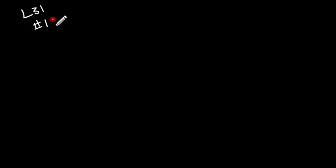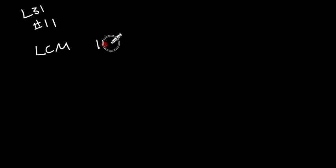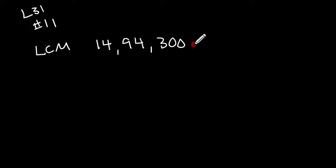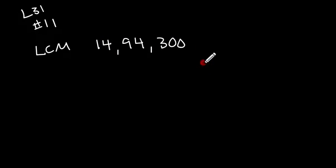The first one is from lesson 31, number 11, and we are to find the least common multiple of the numbers 14, 94, and 300. Basically what you're finding is the number that all three of these will divide into evenly — and not just any number, but the smallest number that all three of these can divide into evenly.